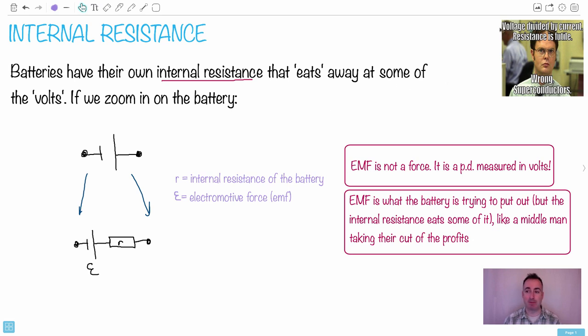This is again from The Office, but voltage divided by current. Resistance is futile. There's a lot of things here. Resistance is futile. It's supposed to be from Star Trek. Have you ever seen The Next Generation, the original versions? There were people called The Borg. But then, of course, Dwight Schrute from The Office, he says, wrong, superconductors, because the resistance is zero.